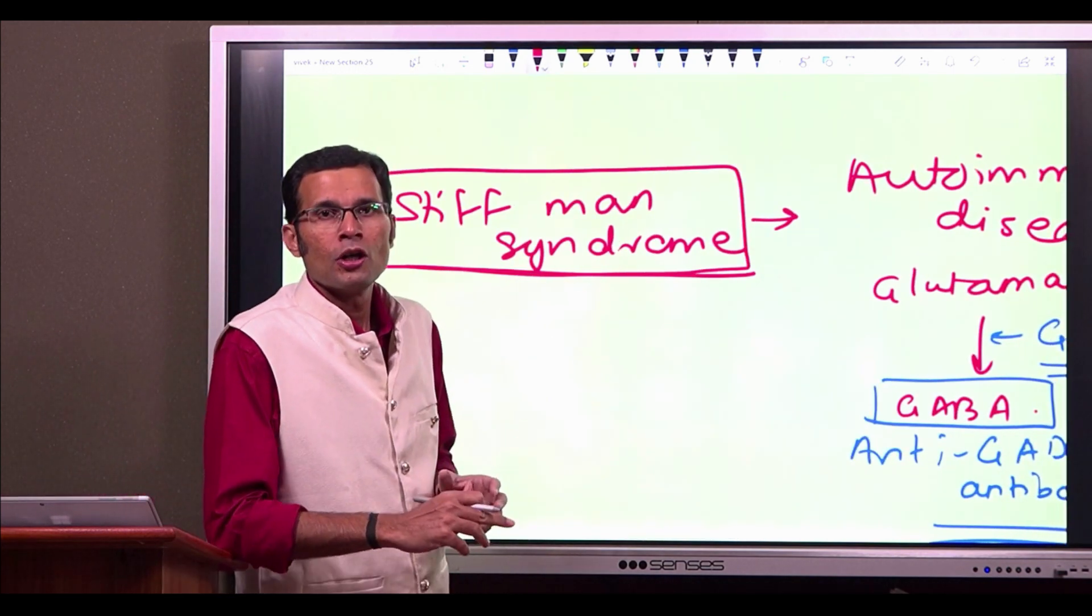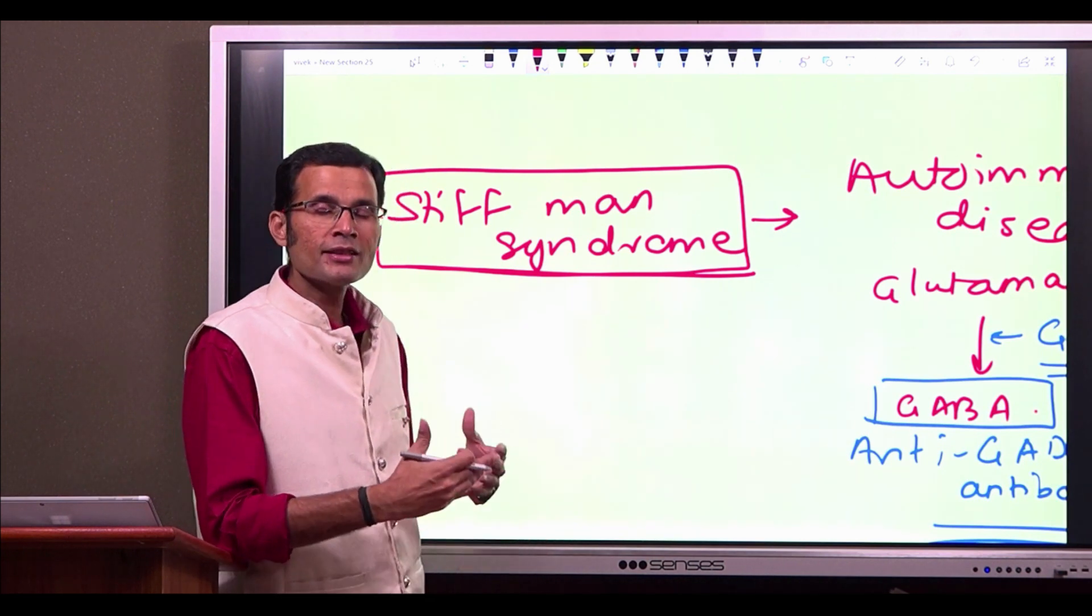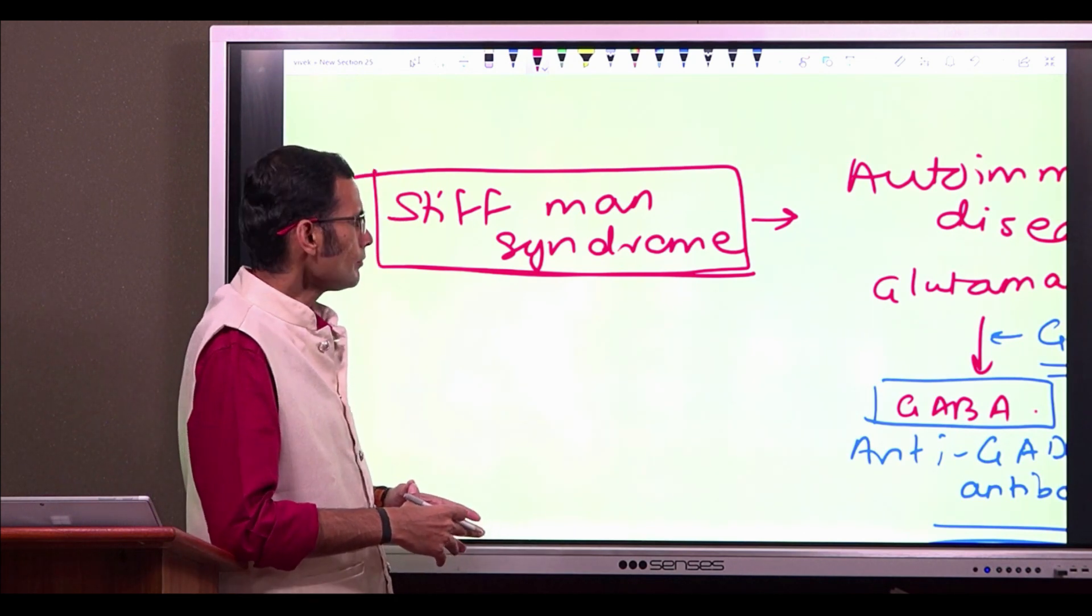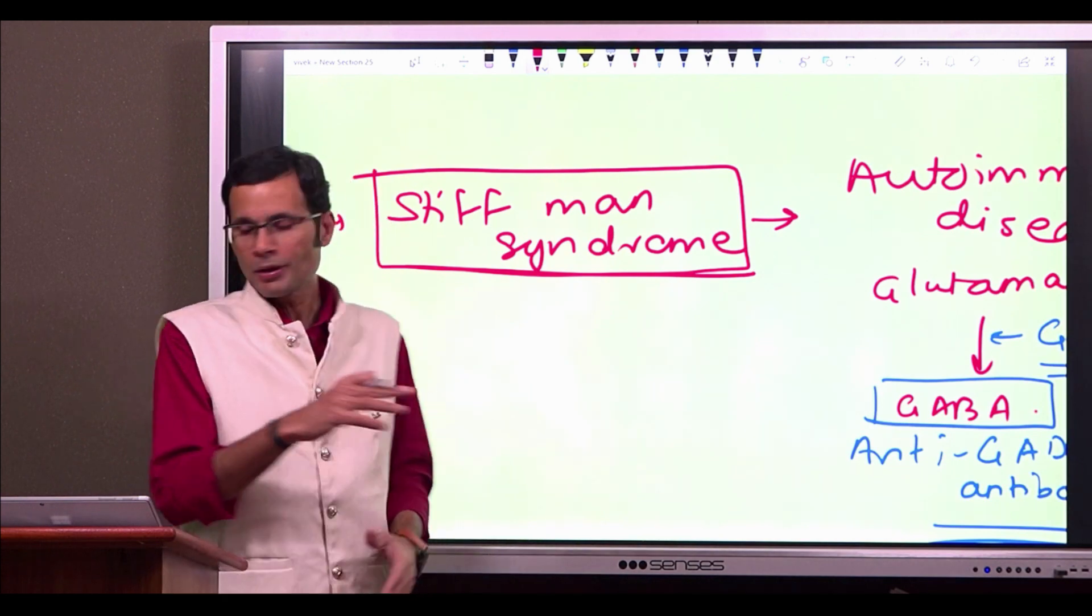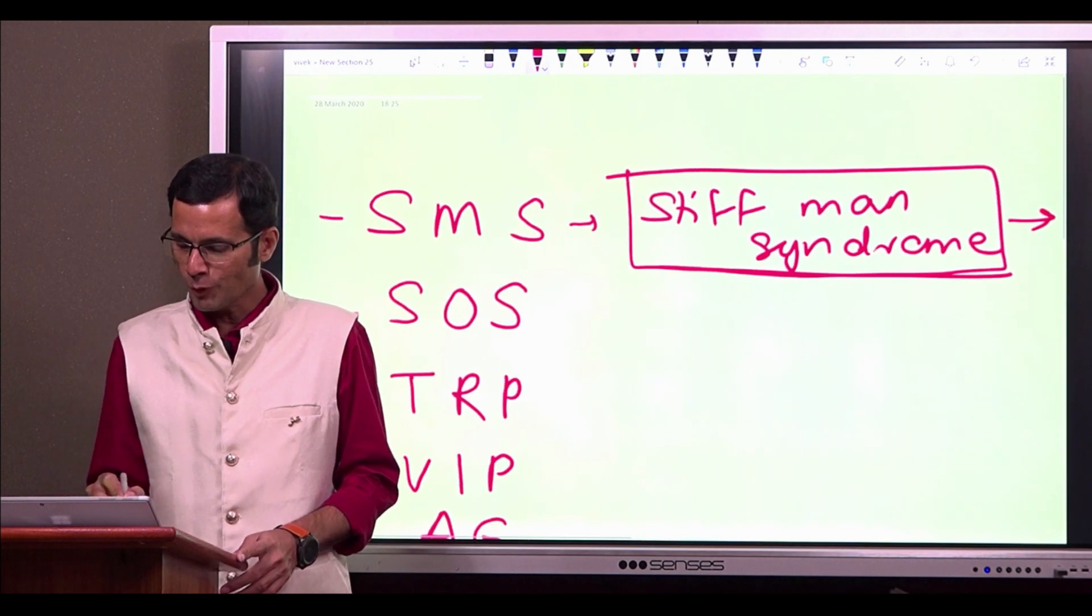So that is the stiff man syndrome. Basically, it is about the hypertonia in the muscles and why there is this hypertonic or rigid muscles is because of deficiency of the GABA. Remember, it is an autoimmune disease. So that is the first one.